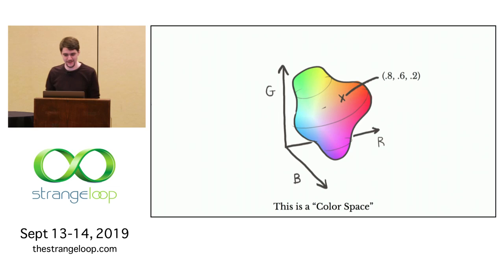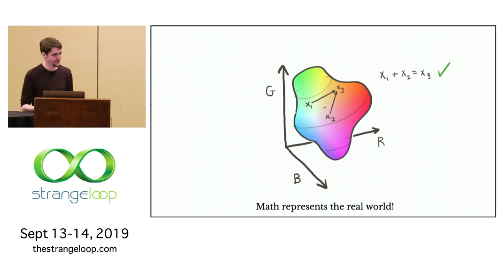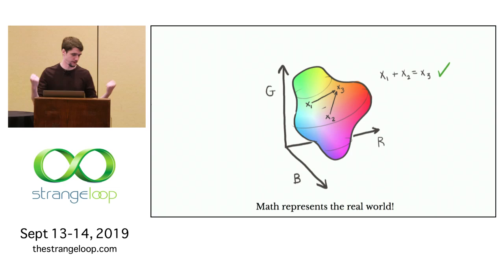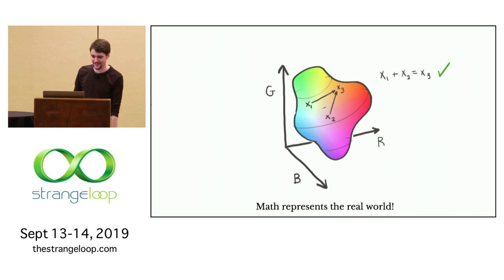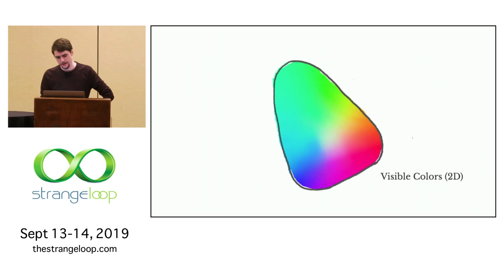A color space is a space with a bunch of colors in it — color volume is another word for it. The interesting thing is that you can do math in this color space, which shouldn't be intuitively obvious at all. As it turns out, you can take the three numbers from this color space, add them together, and the color you get as a result would be the same color you'd get in real life if you had overlaid those lights. This property — like kind of amazing — is the fundamental basis of how we use color. It's the reason we can do math on color at all.